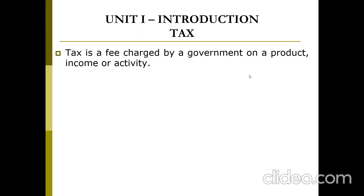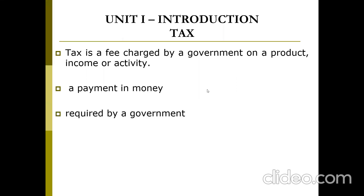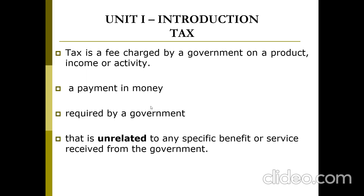Tax is a fee charged by a government — and government implies it may be the state government, central government, or local government. These are the characteristic features of tax. It is a payment in money, a fee charged by government, required by government. A private person cannot collect a tax; only government can collect tax.